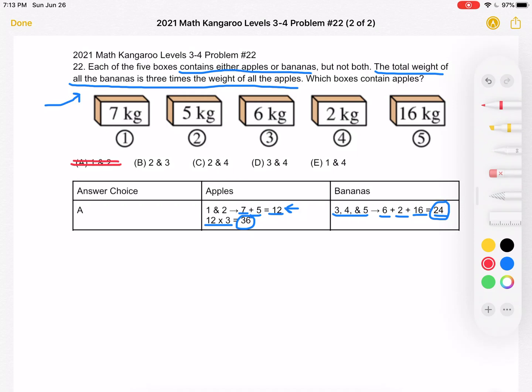We're going to use the same logic to go through the rest of the answer choices. Next, we're going to go to B. For answer choice B, we have that boxes 2 and 3 have apples. So box 2 has 5, box 3 has 6, so we would have a total of 11 apples.